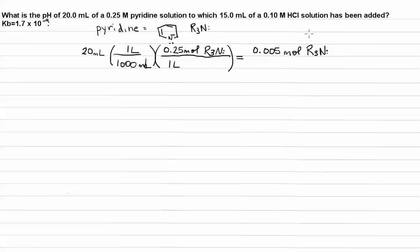Okay, let's determine how many moles of acid we have. We have 15 milliliters of the acid solution. Once again, there's 1,000 milliliters in a liter. And the molarity of the acid solution is 0.1. That means that for every one liter, there's 0.1 moles of HCl. So that means we have in total 0.0015 moles of HCl.